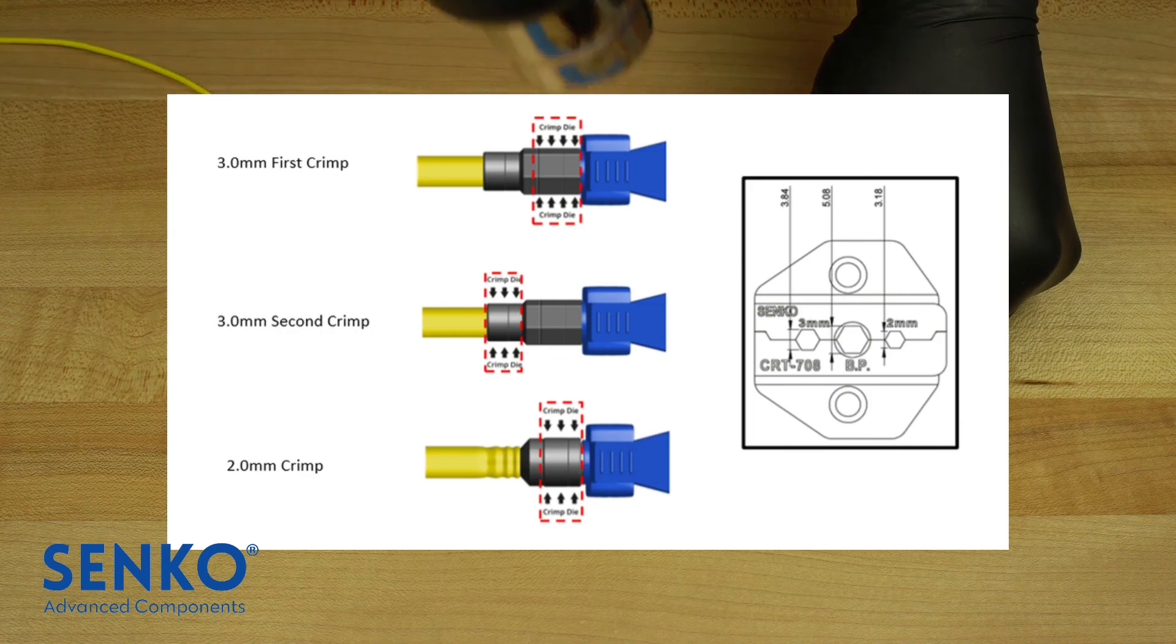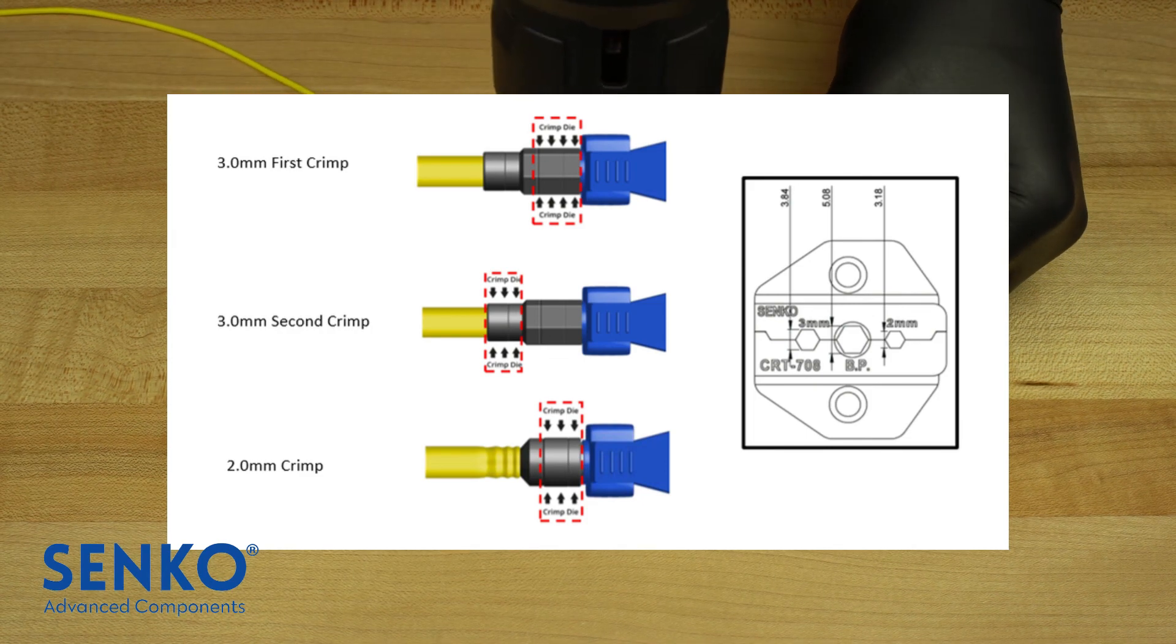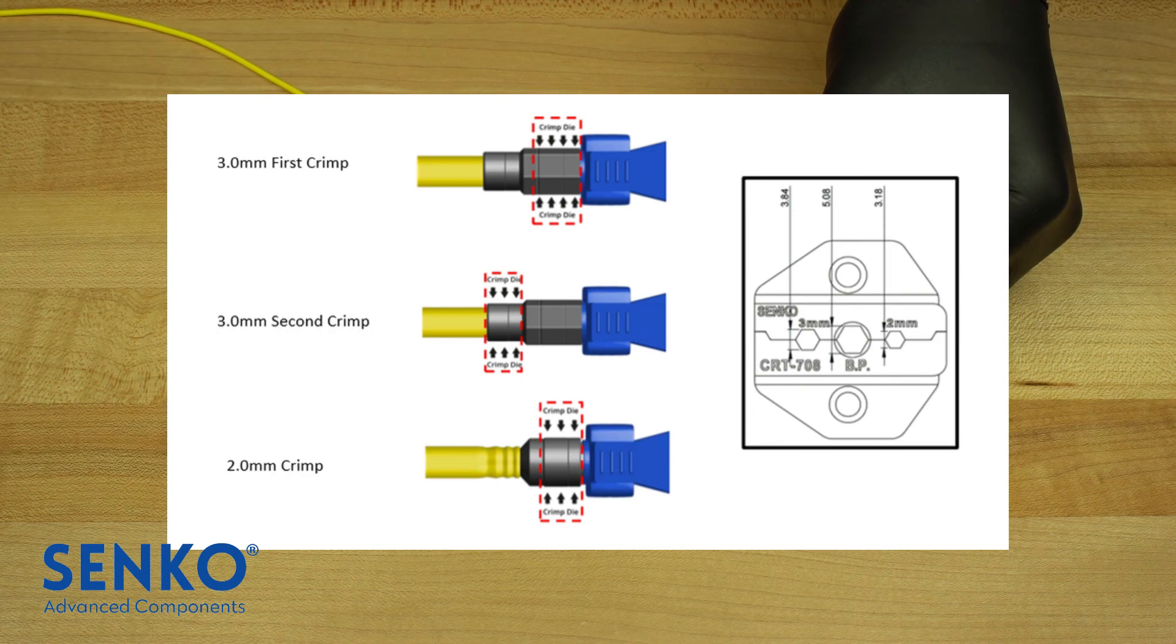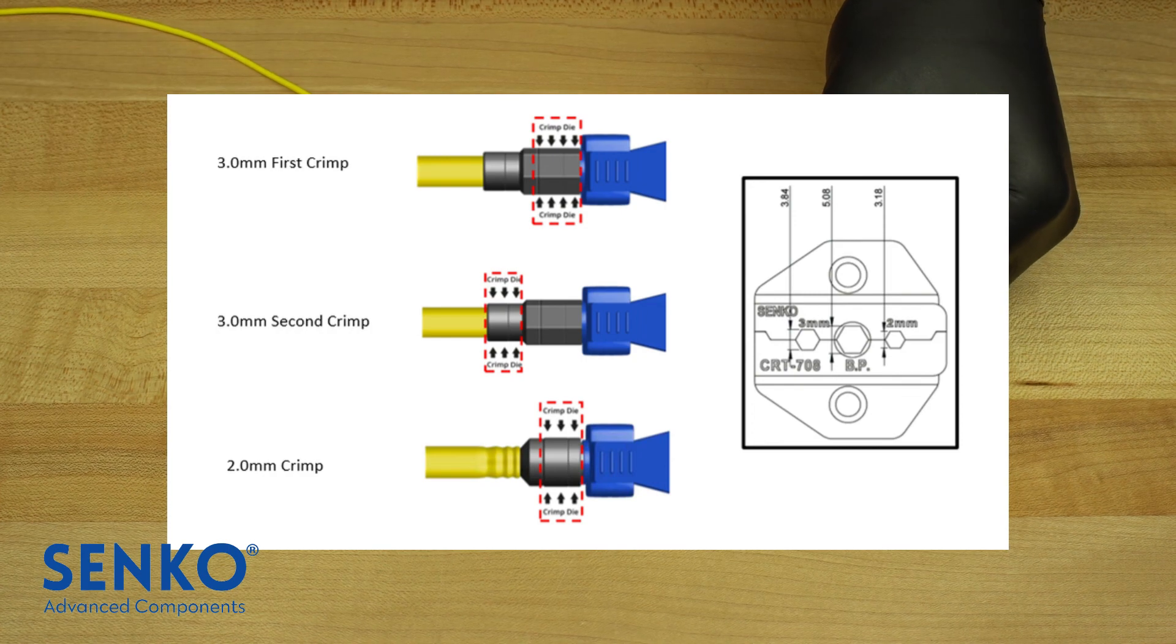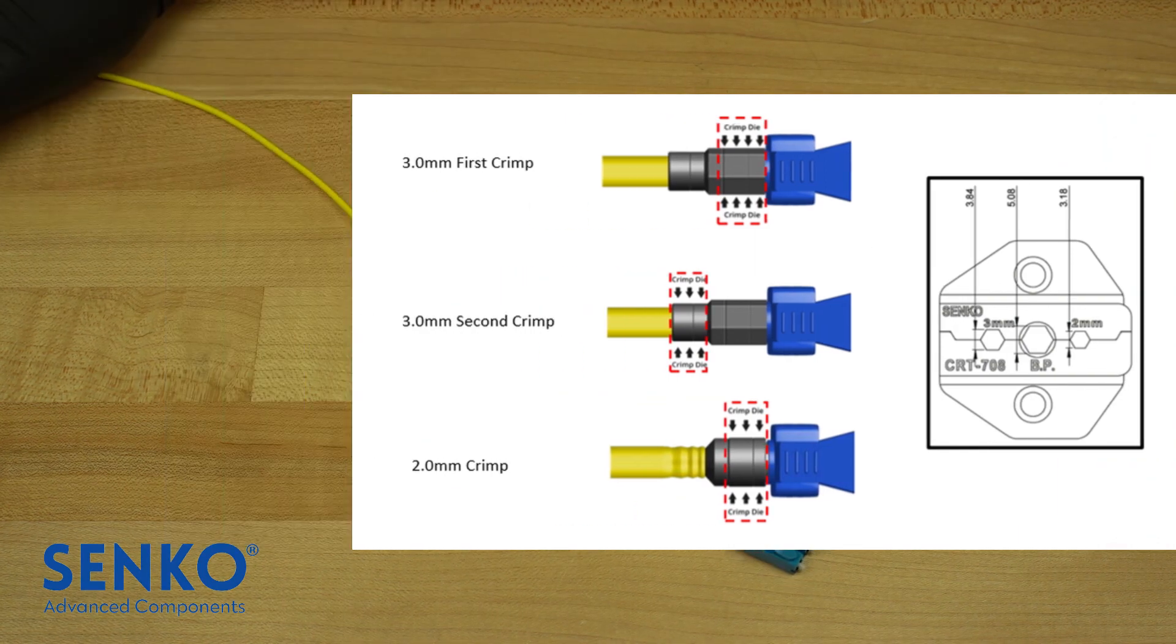For the 2mm version, collapse the heat shrink tube by evenly heating it with a heat gun. For the 3mm version, use the 3mm cut on the crimp tool to crimp the smaller step of the crimp onto the cable as shown in the figure.